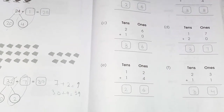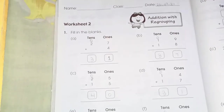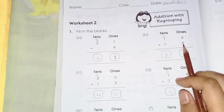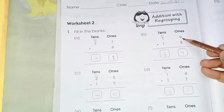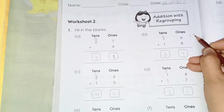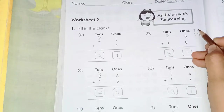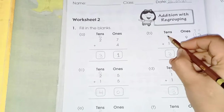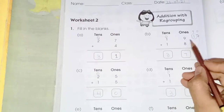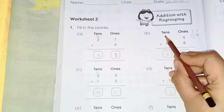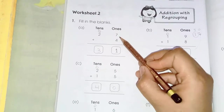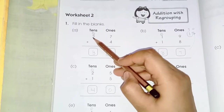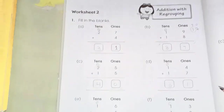Worksheet 2, page 190: addition with regrouping. This means we have to add the carry. For example, 9 plus 8 is 17 — we write the ones digit in the ones column and the tens digit in the tens column: 7 in ones and 1 carried over. Then 2 plus 1 equals 3. Similarly, 7 plus 4 is 11 — write 1 here and carry 1 to the next column. Then 2 plus 1 equals 3.